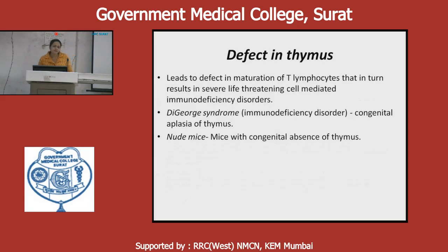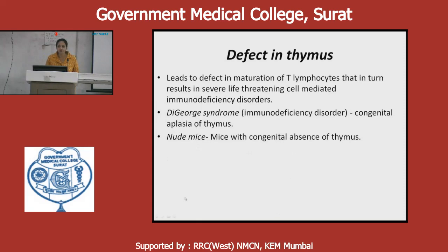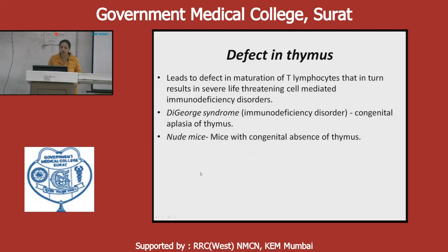A defect in the thymus leads to defective maturation of T lymphocytes, which results in severe life-threatening cell-mediated immunodeficiency disorders. For example, DiGeorge syndrome is a congenital aplasia of the thymus, with a defect in development of the third and fourth pharyngeal pouches along with defects in the aorta and parathyroid glands. Nude mice are mice with a congenital absence of thymus. These are the main syndromes associated with thymus defects.